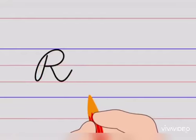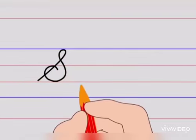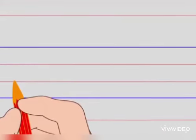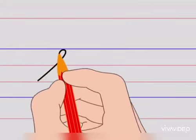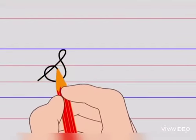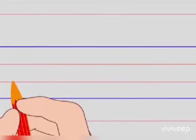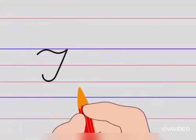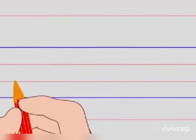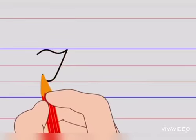The next alphabet is S. Cursive Capital S. Let's do it again — Cursive Capital S. The next alphabet is T. Cursive Capital T. Let's try it again — Cursive Capital T.